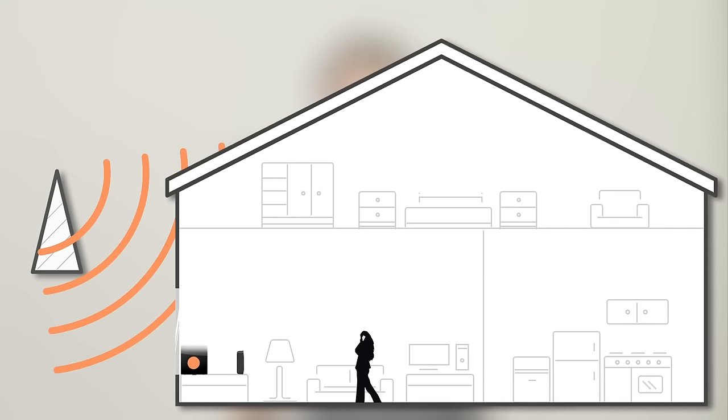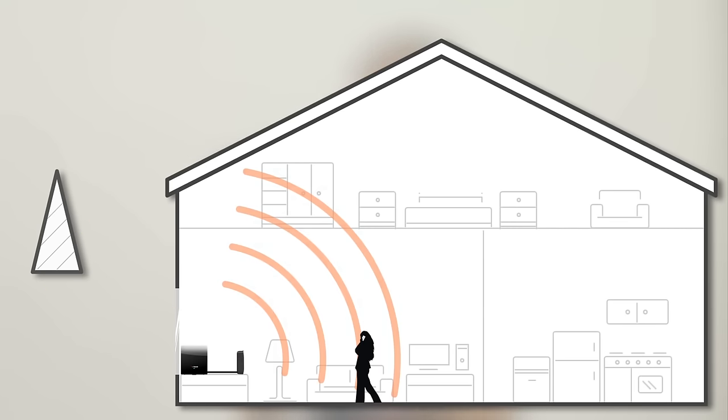A signal booster works by taking weak cell signal, boosting it, and then sending strong signal to your phone and back to the cell tower.